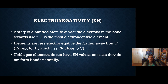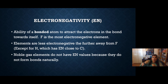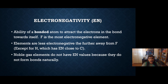To talk about polarity, we also have to remember what electronegativity is — EN. Electronegativity is the ability of a bonded atom to attract the electrons in that bond close to itself. Fluorine is the most electronegative element in the table. Elements are less electronegative the further away from fluorine they are, except for hydrogen. Hydrogen is about equal to carbon in electronegativity. The noble gases do not have electronegativity values because they don't make bonds, so they don't have bonded electrons to pull close.